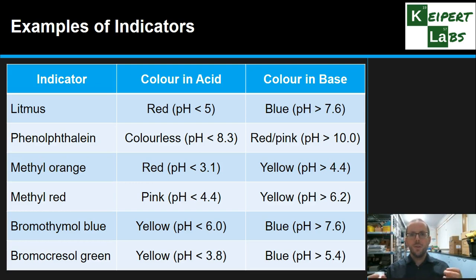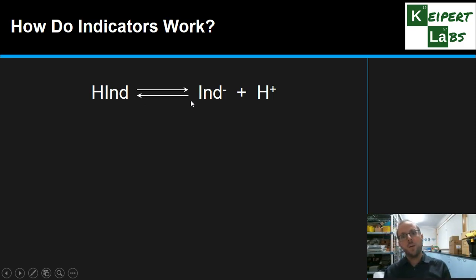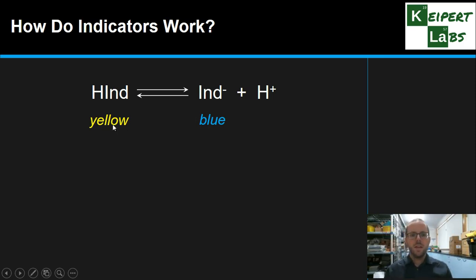The colours they turn and the pHs at which they change vary from compound to compound — that's what makes them so useful. We have different tools for different jobs and different colour combinations to observe. So how do indicators actually work? What's the science behind how this colour change happens? This is the general equilibrium for an indicator: the molecule has an extra hydrogen in one form, and that hydrogen ion has been removed in the other form. We've got an equilibrium between these two different coloured versions. Let's look at bromothymol blue, which has a yellow and a blue version. This is an equilibrium like any other, so Le Châtelier's principle is going to influence what happens.